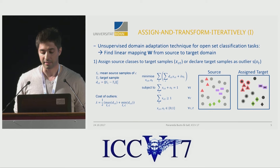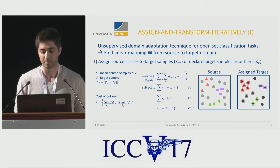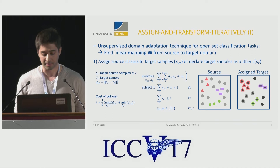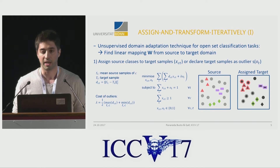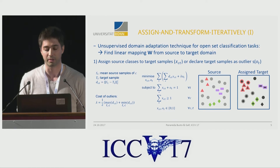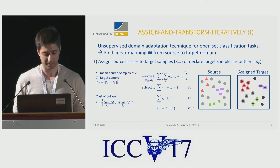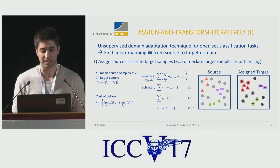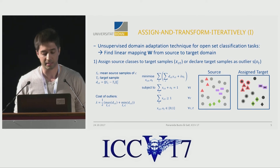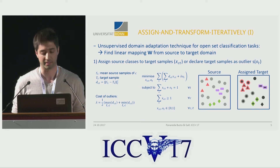Then, in the target domain, we assign labels, but as you can see, not all of them are labeled. This is because we also introduce an outlier detector, where we penalize target samples which are very far away from the source clusters. The cost of an outlier is seen as lambda, and it's automatically updated based on the distances.